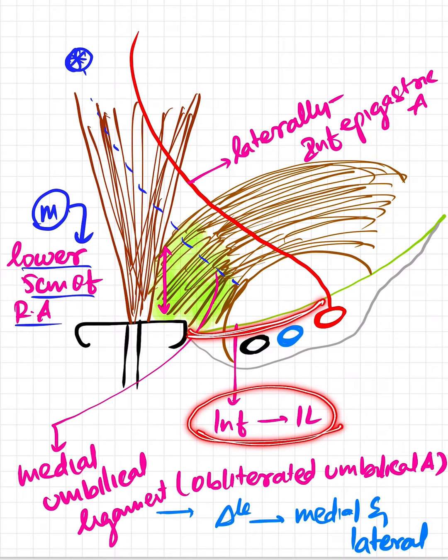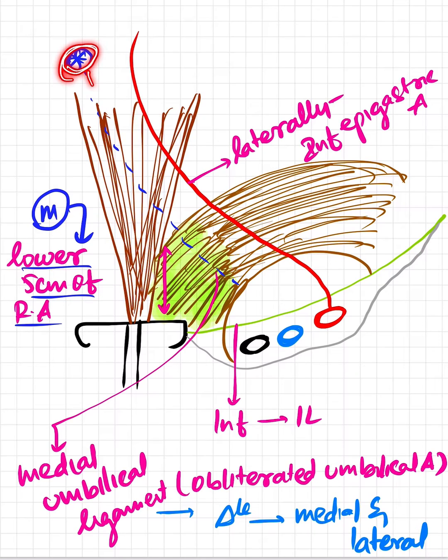Inferiorly, it is formed by the inguinal ligament. From the umbilicus, a ligament comes and intervenes this triangle, namely the medial umbilical ligament or obliterated umbilical artery.